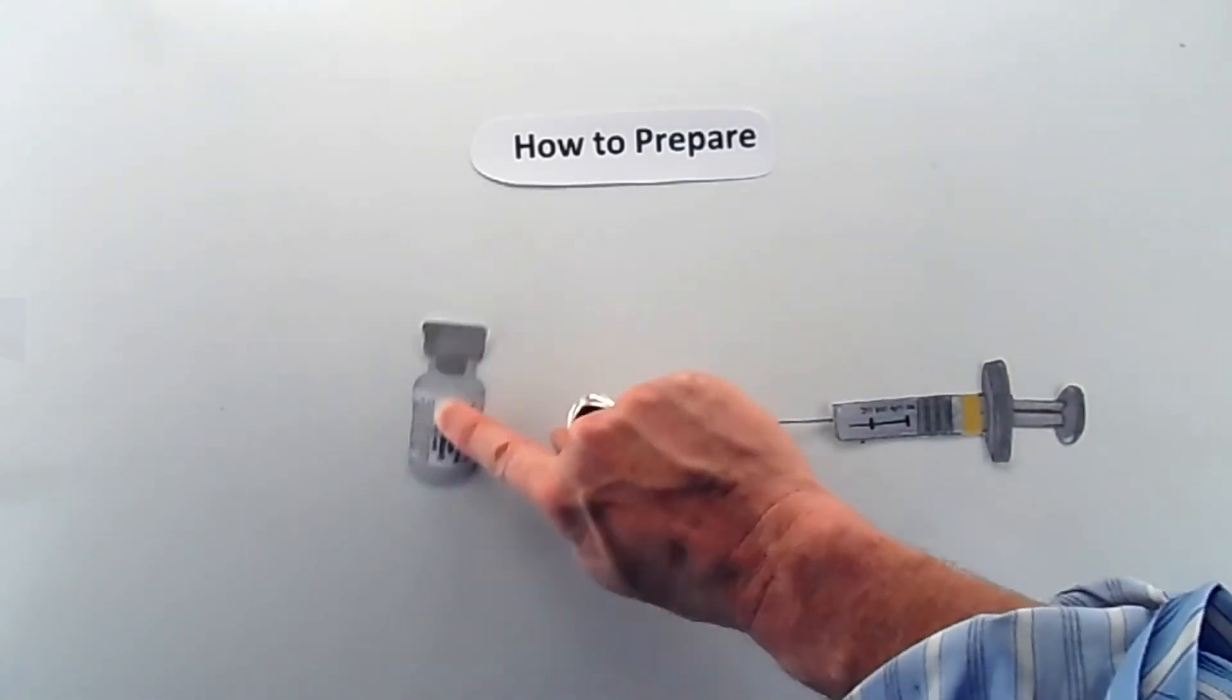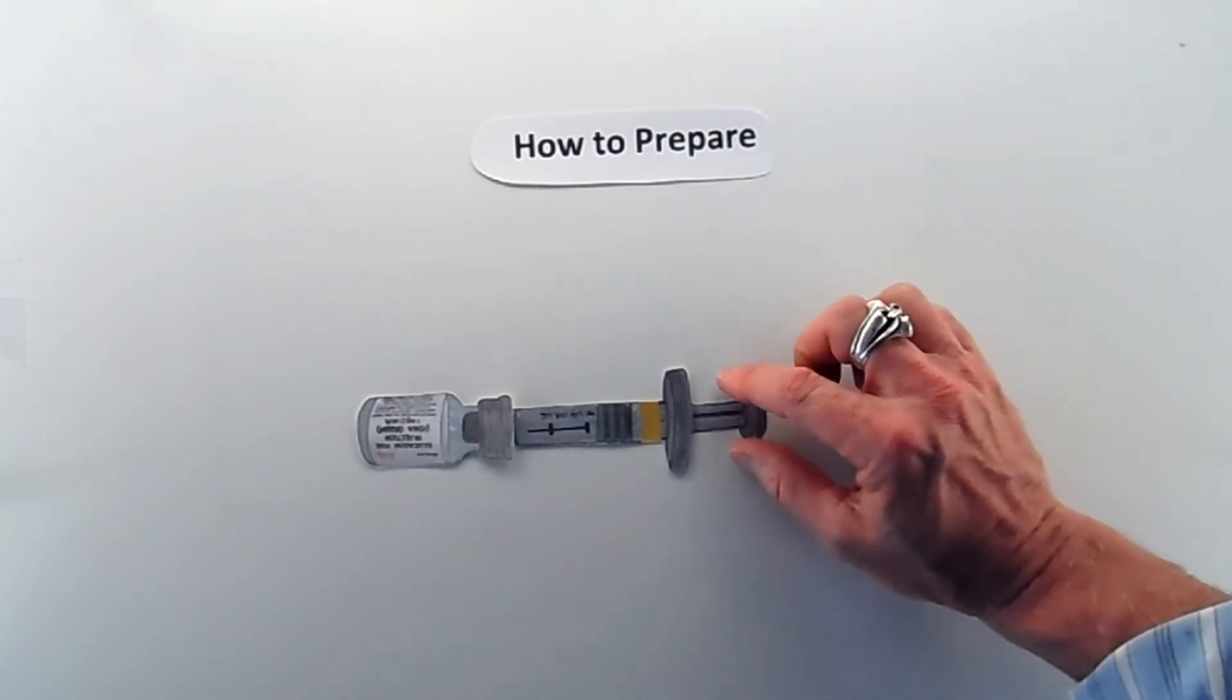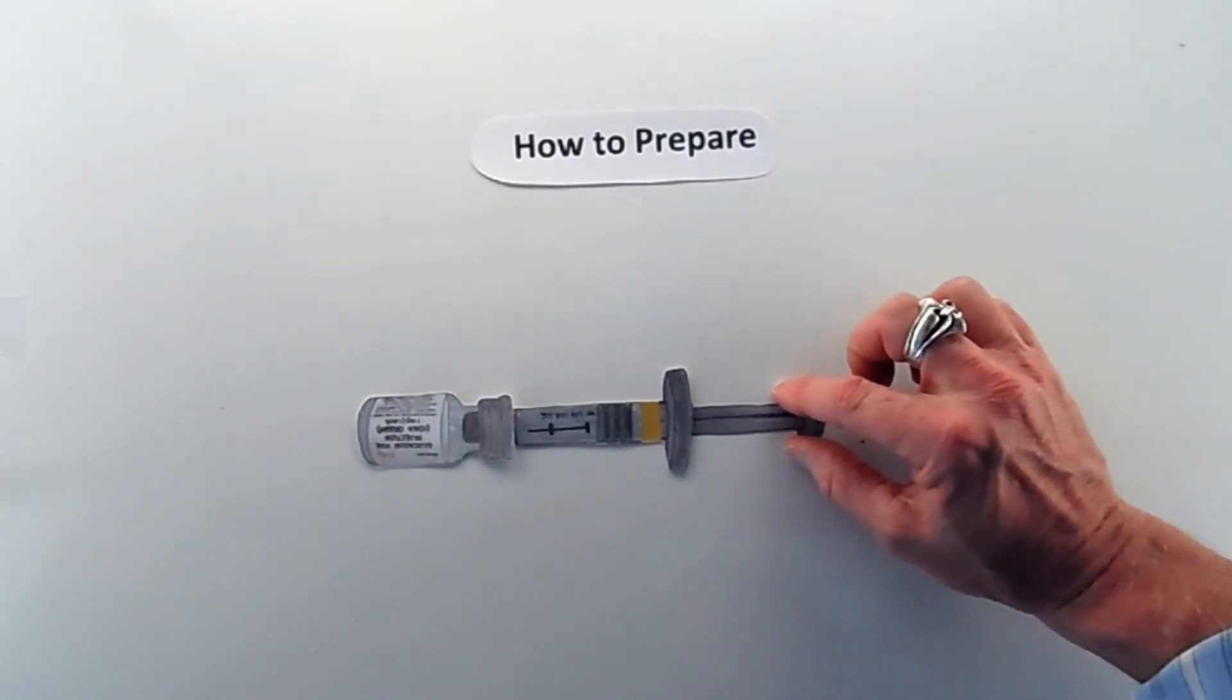Remove the syringe from the vial and gently shake the vial until the liquid becomes clear. Using the same syringe, withdraw all of the liquid from the vial.